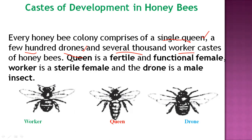So in a single comb, there are three important castes: the queen, the drones, and the workers. The queen is a fertile, functional female whose work is to lay eggs. The workers are sterile females, and the drone is a male insect. These are the major castes developed in a honeybee colony.